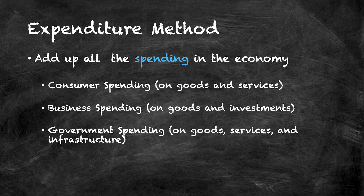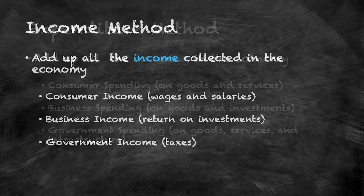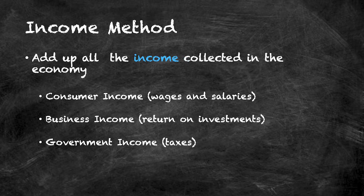The second way to calculate GDP is through the income method. This is where you add up all of the income received by owners of factors of production. So this includes wages and salaries, business investments, and of course the government's income, which is just taxes.